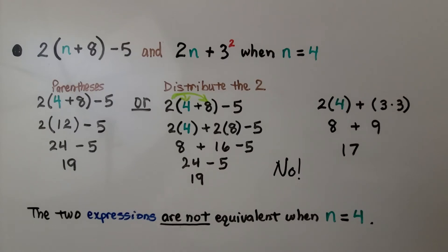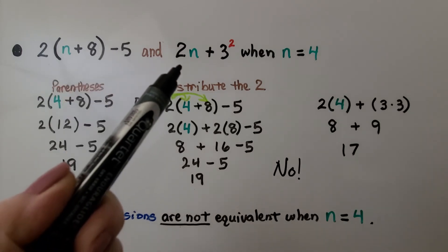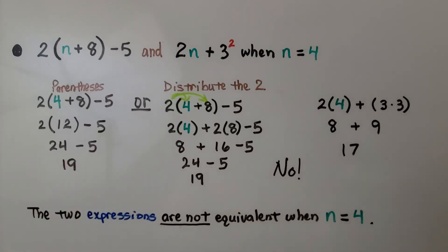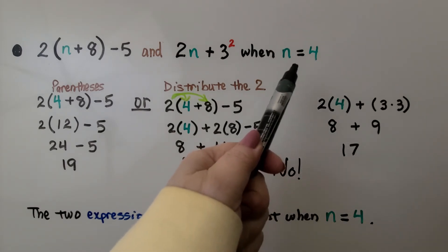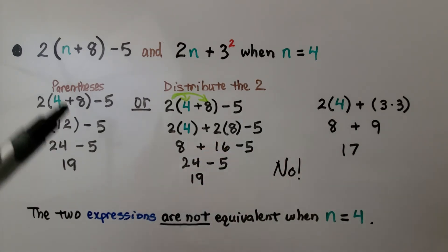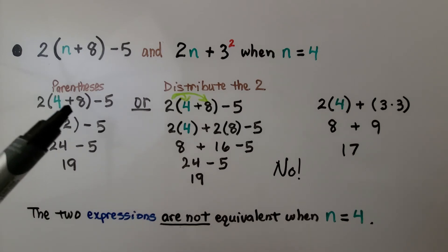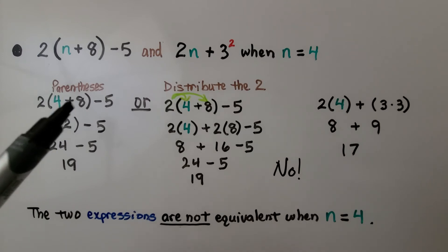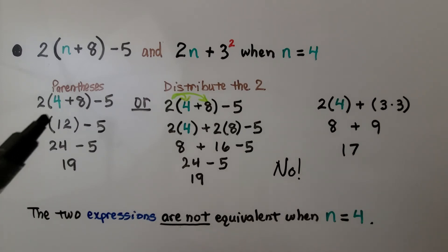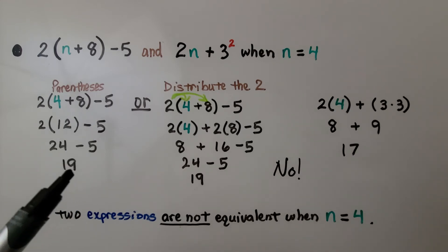Now let's see if these two expressions are equivalent. We have 2 times (n plus 8) minus 5, and 2n plus 3 raised to the second power, when n is equal to 4. For the first expression, we do within the parentheses first and substitute 4 for n. We have 4 plus 8, which is 12. Then 2 times 12, which is 24. We subtract 5 and get 19.